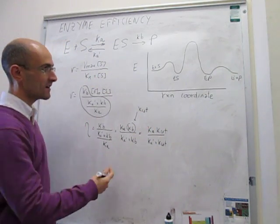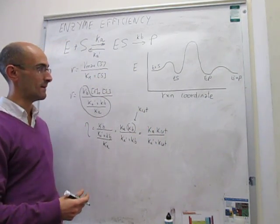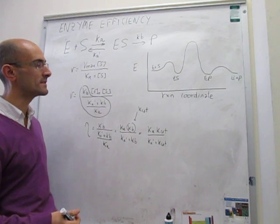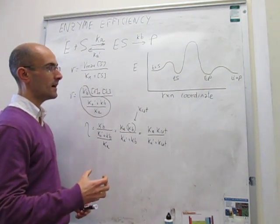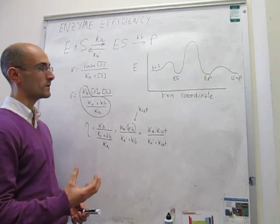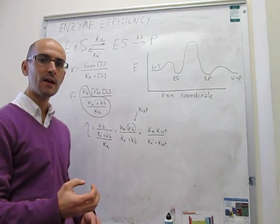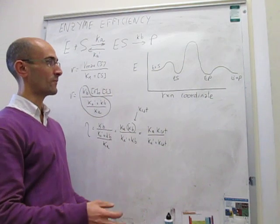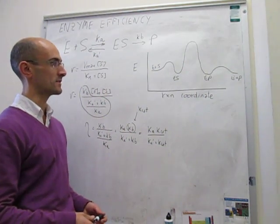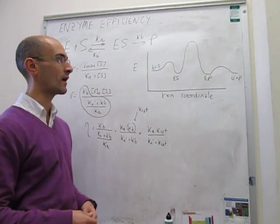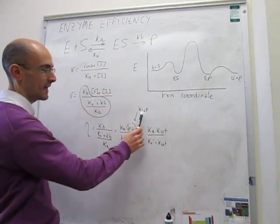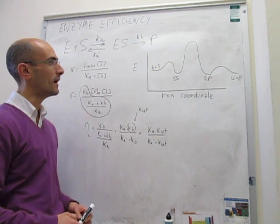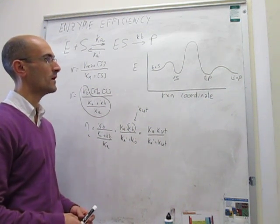So this is going to be the same as k sub a, k cat over k a prime plus k cat. The name of this rate constant, the catalytic constant, also receives the name of turnover frequency of the enzyme. Essentially, this is a first-order rate constant in which the only thing that you measure is how many times per second an enzyme can turn substrate into the product. Essentially, how often you can crank out a product from the reaction. So this k cat is exactly what the enzyme has control over.